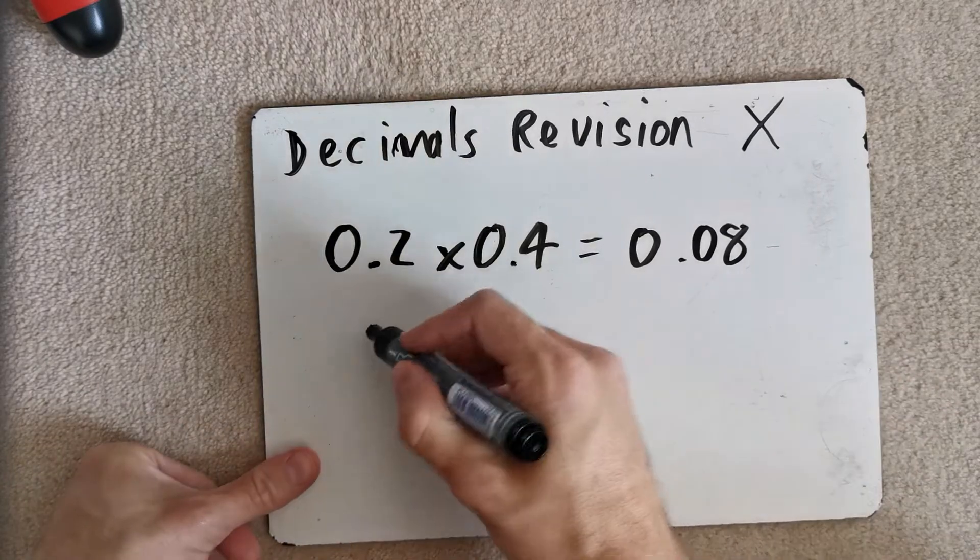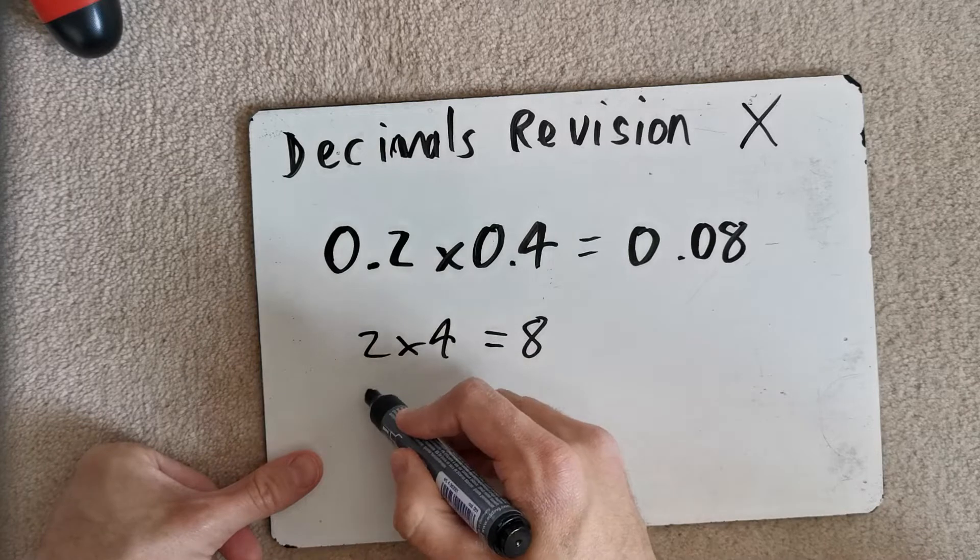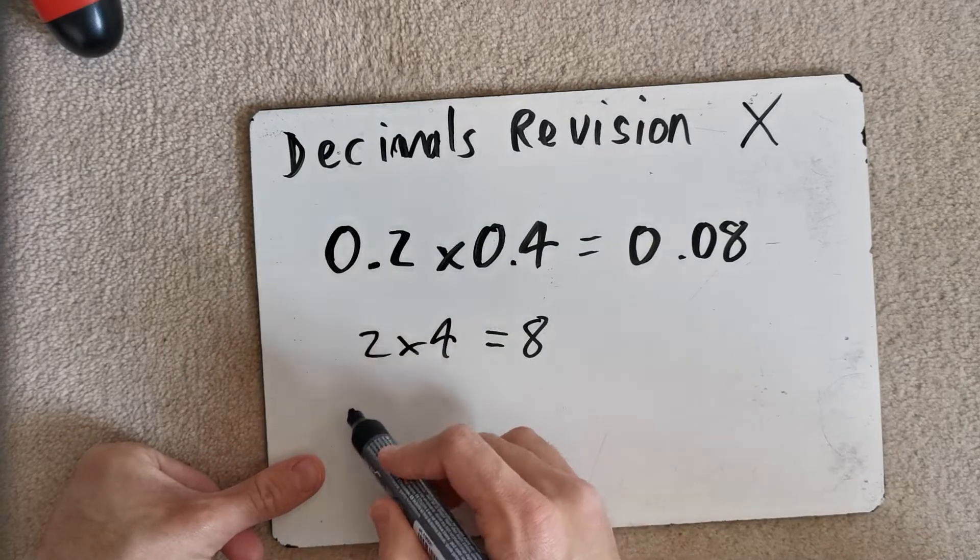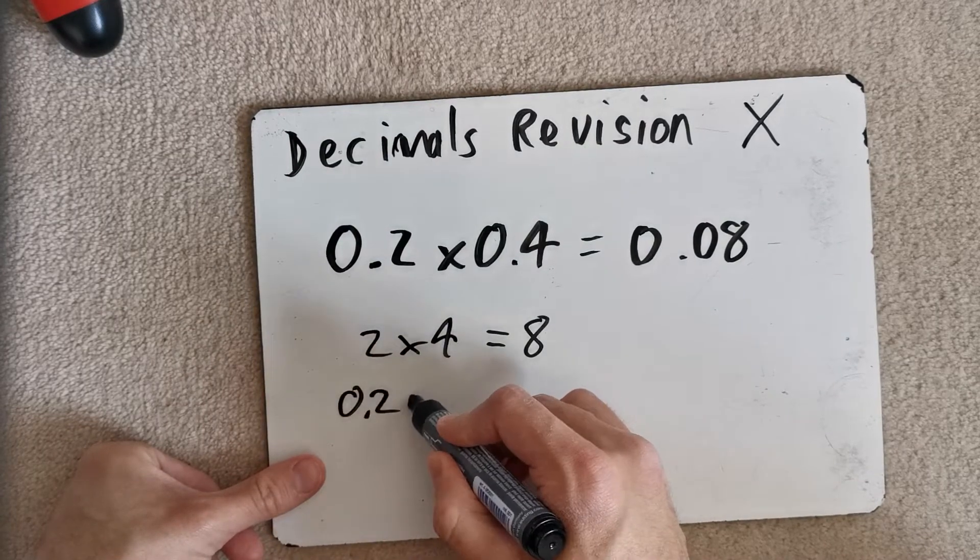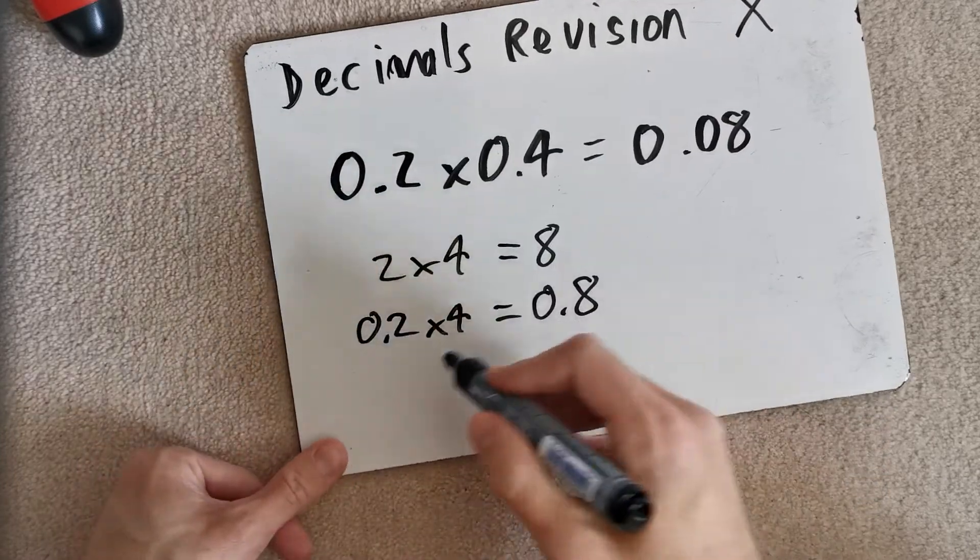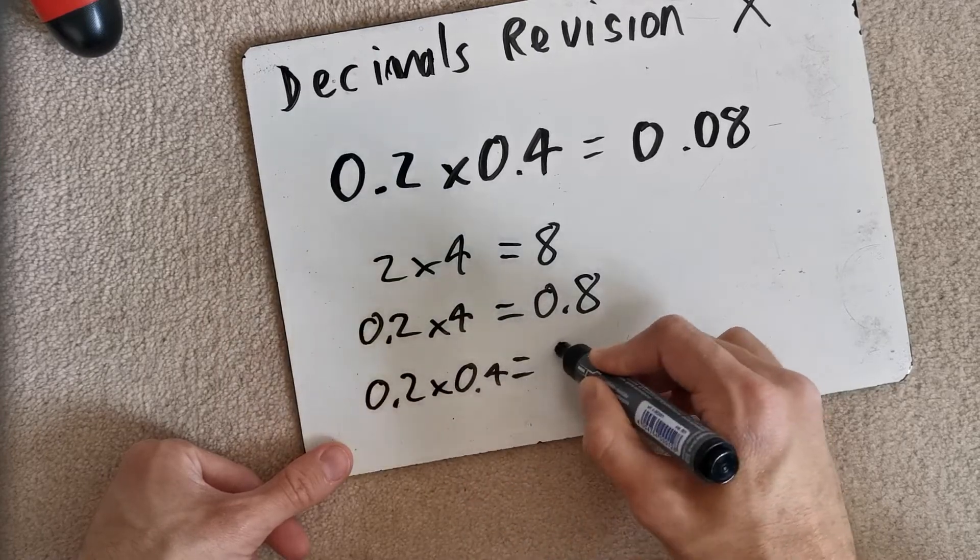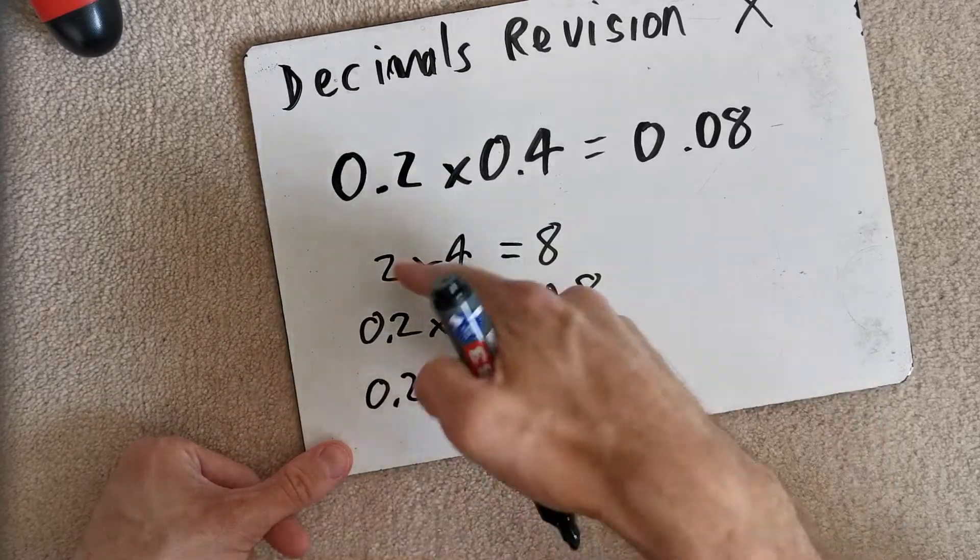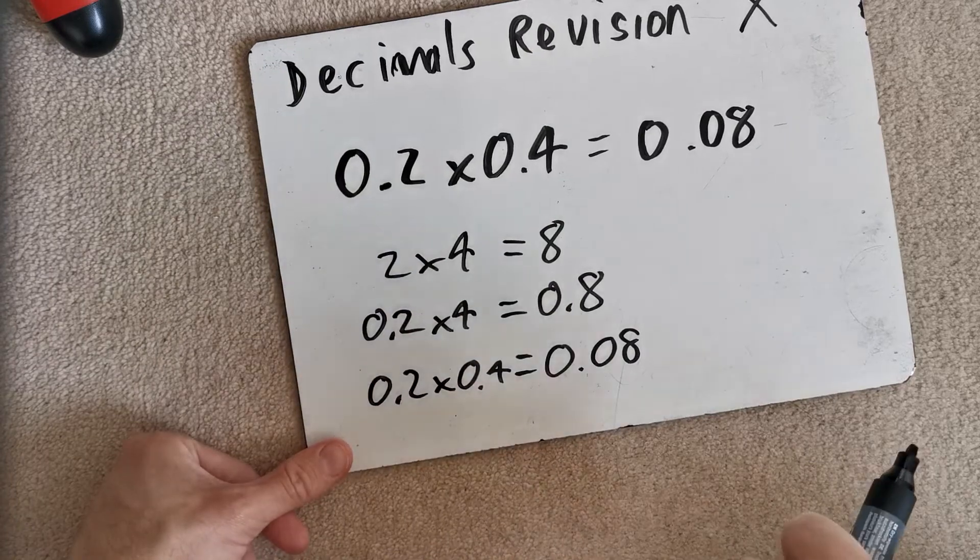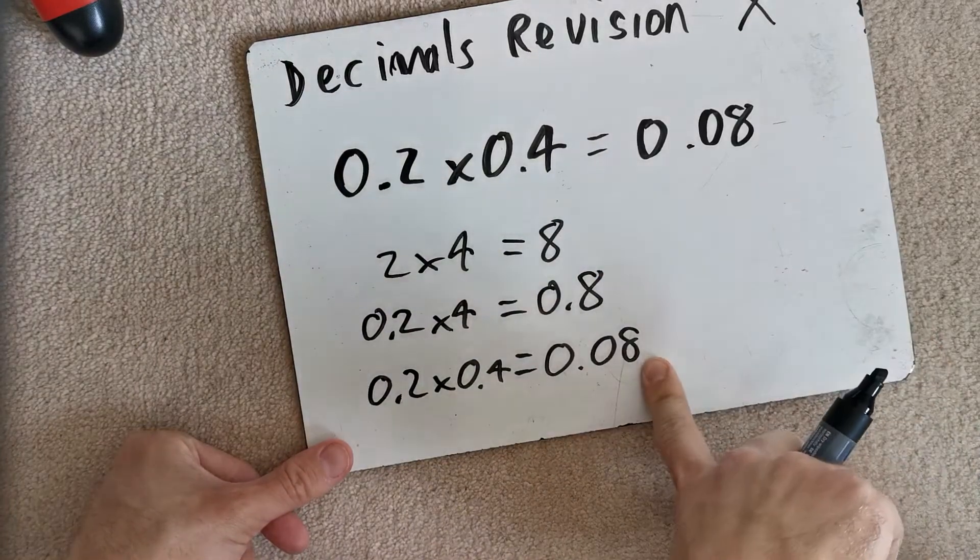Okay, well, think of it this way. 2 times 4 is going to be 8, isn't it? So let's make one of them 10 times smaller. 0.2 times 4 would be 0.8. Make this 10 times smaller as well. 0.2 times 0.4, that becomes 0.08. If they both become 10 times smaller, then this becomes 100 times smaller.